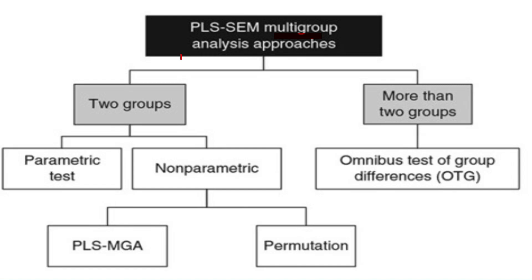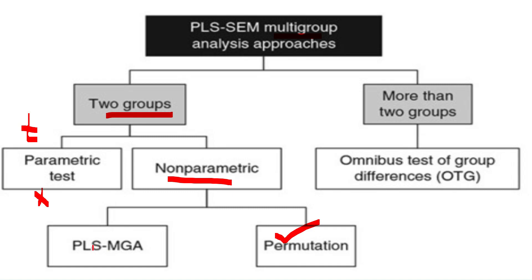For Step 3a, the equality of means confidence intervals are insignificant, meaning the group means are not significantly different. Similarly for variances. Our measurement model invariance criteria are therefore fulfilled. Once invariance is established we move to the multigroup analysis. For two groups we have three approaches: parametric test (similar to a t-test with bootstrapping, though prone to Type I error), permutation (preferred when group sizes are comparable), and PLS-MGA (preferred when one group is two to three times larger than the other).